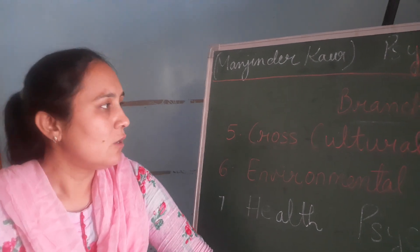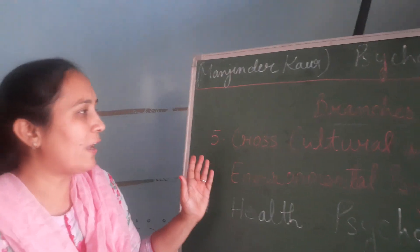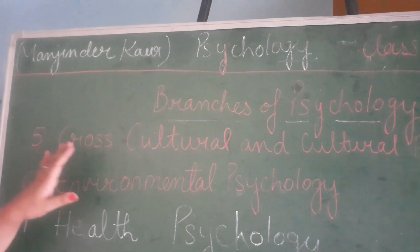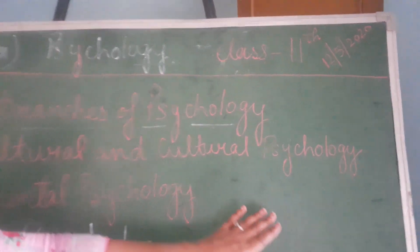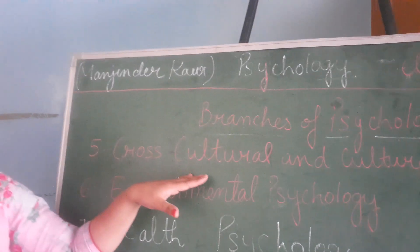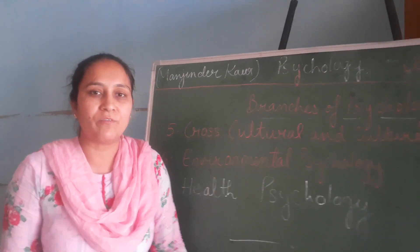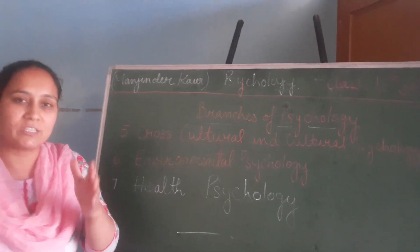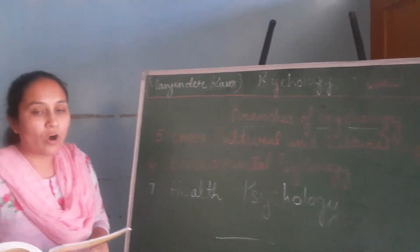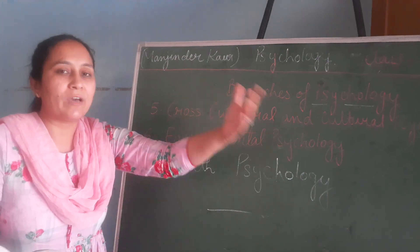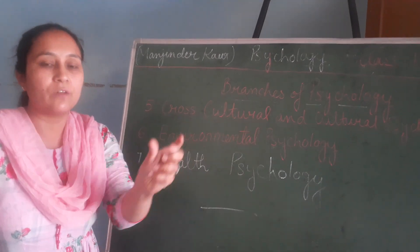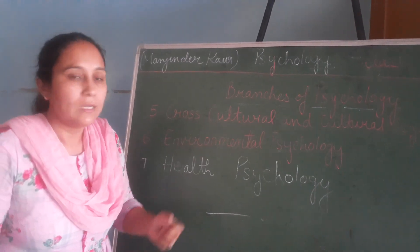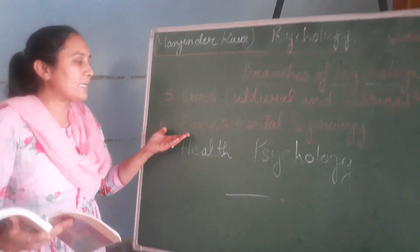In the previous video we covered four branches of psychology. Now we will be doing the fifth branch, that is cross-cultural psychology. Cross-cultural means every culture is different from one another — like Indian culture is different from Western culture. When we study and compare these cultures, like Western culture versus Indian culture, that is called cross-cultural study.